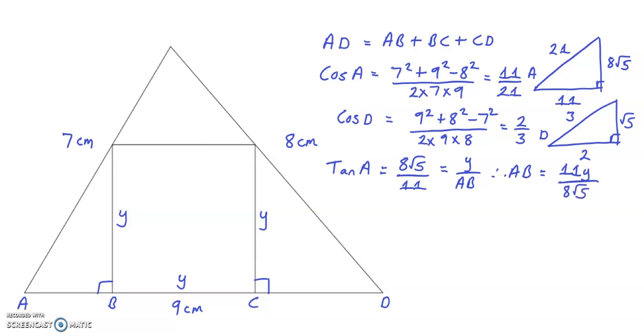And similarly, tan D equals root 5, the opposite over the adjacent 2, and that will equal Y, the opposite over the adjacent CD. Therefore CD equals 2Y over root 5.